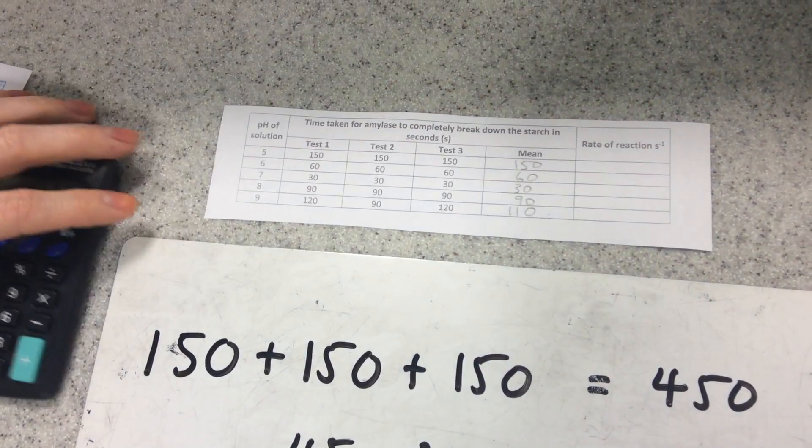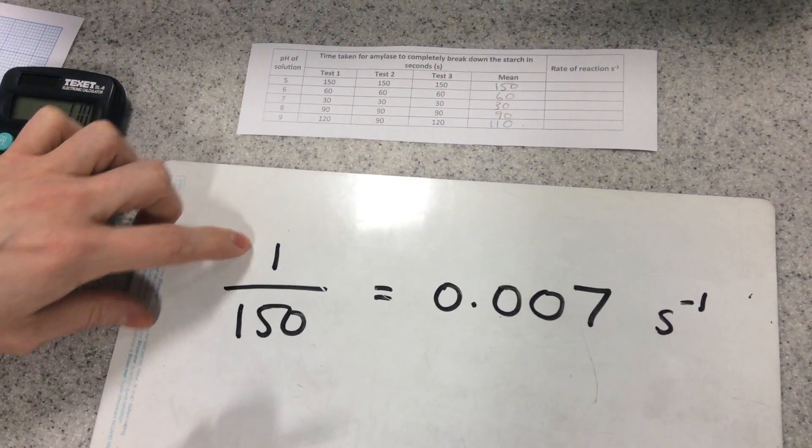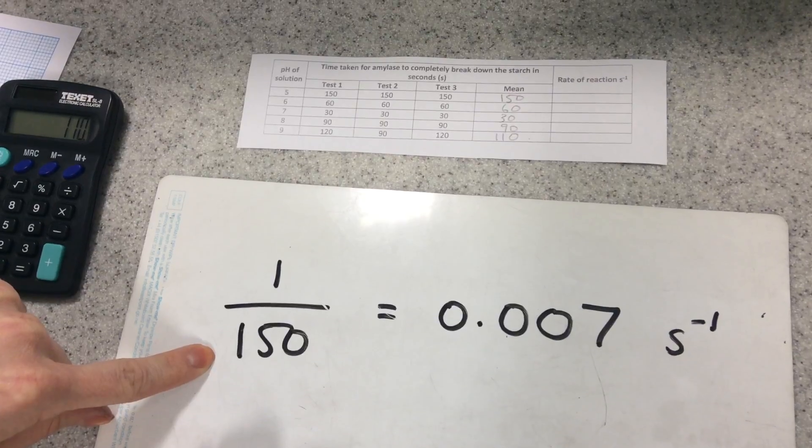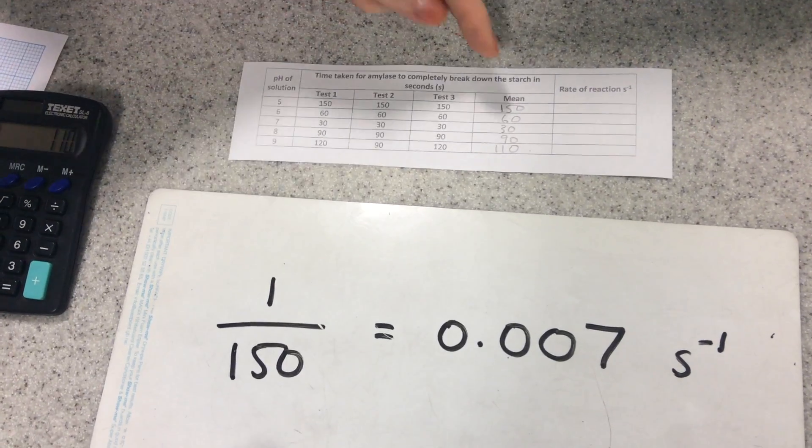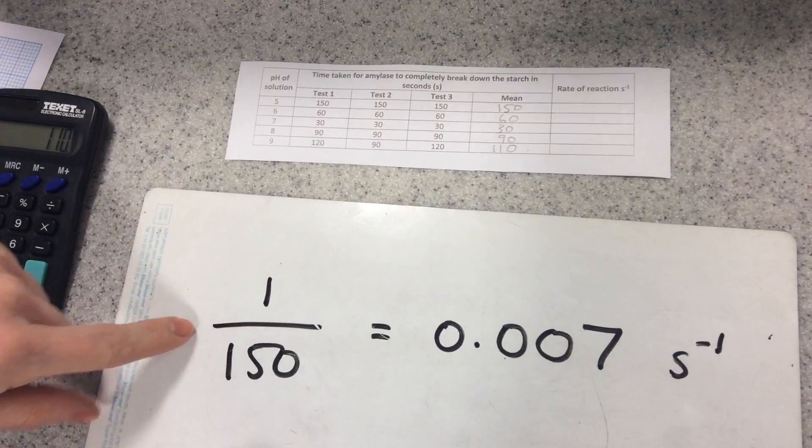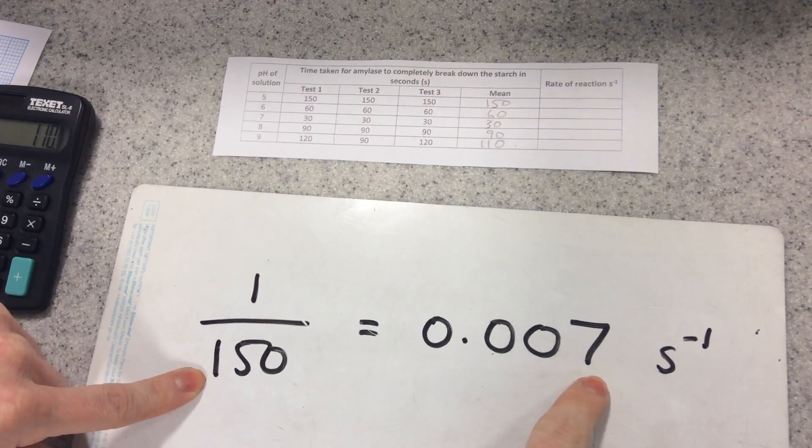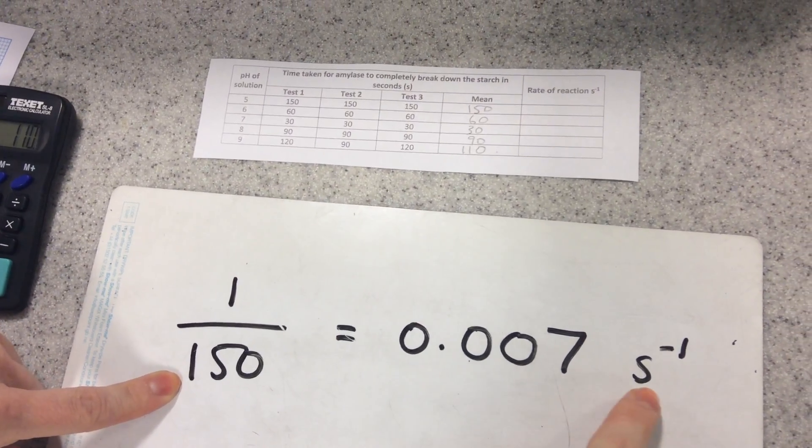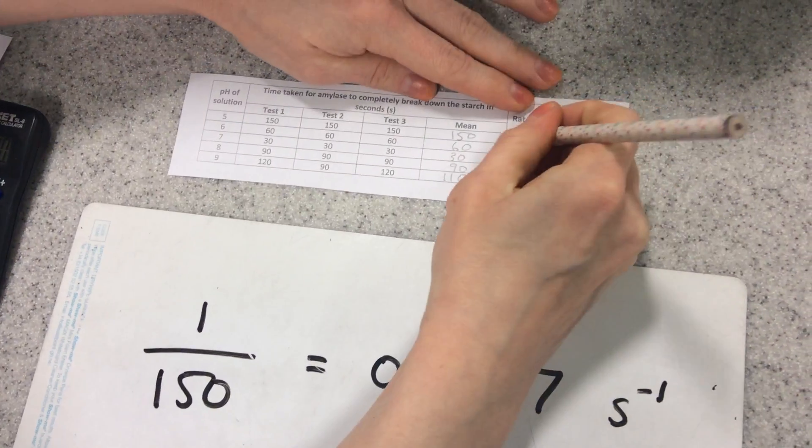Now to work out the rate of reaction, you need to do another calculation, which is one divided by the time it took. So for pH 5, it took 150 seconds on average, so I do one divided by 150, gives me my rate of reaction per second, so I'll write that in,